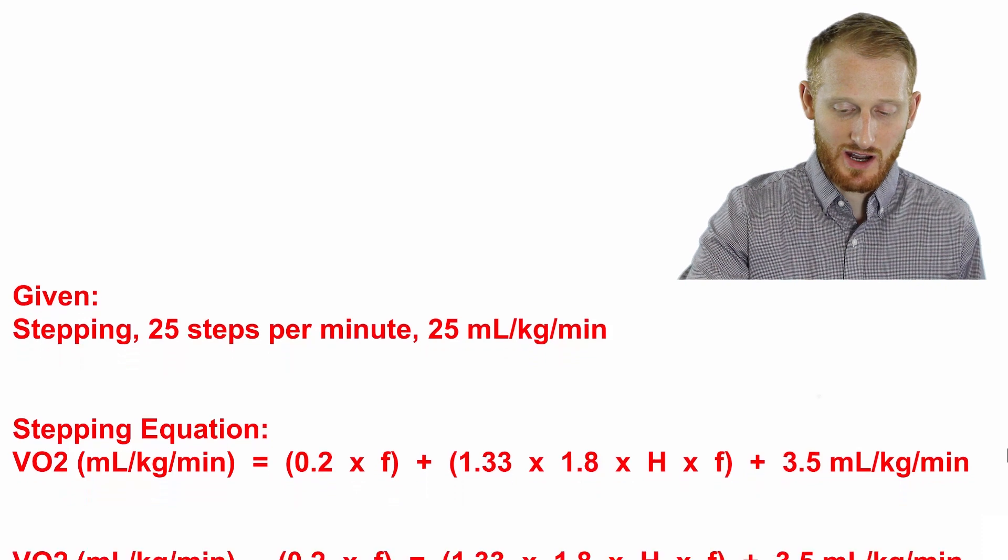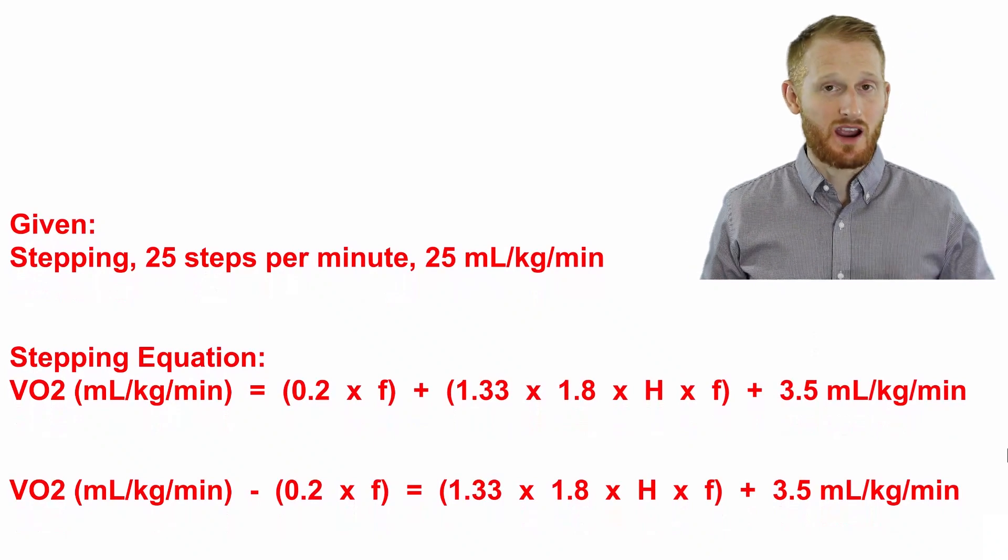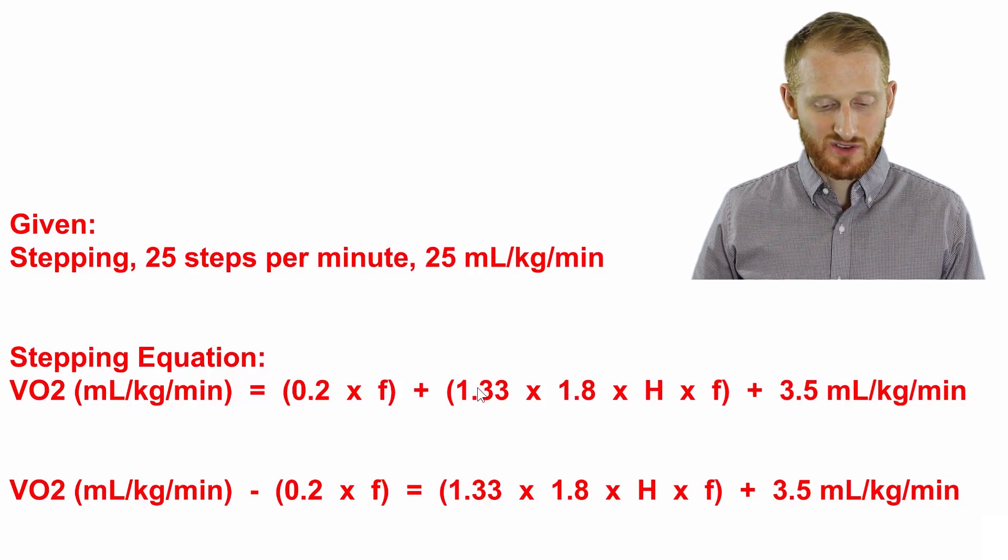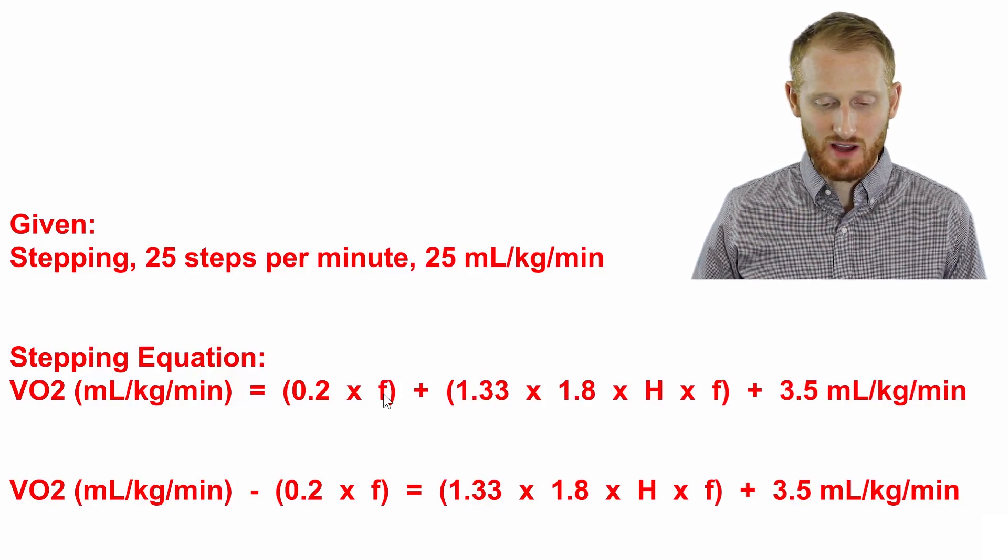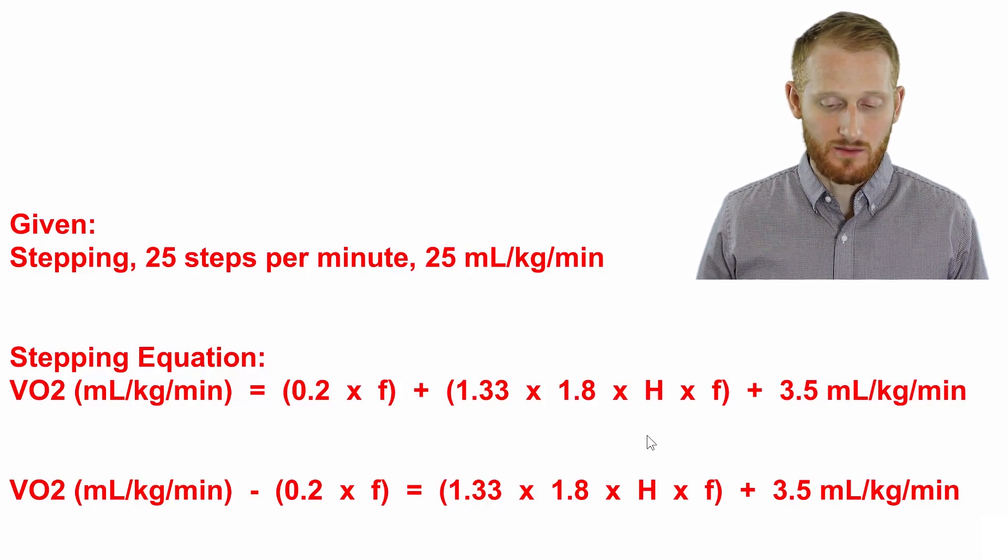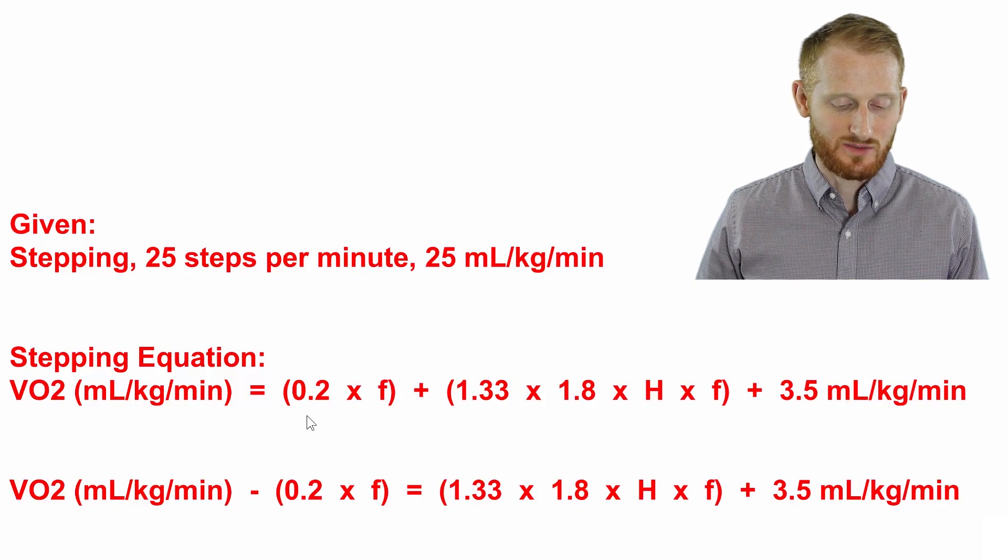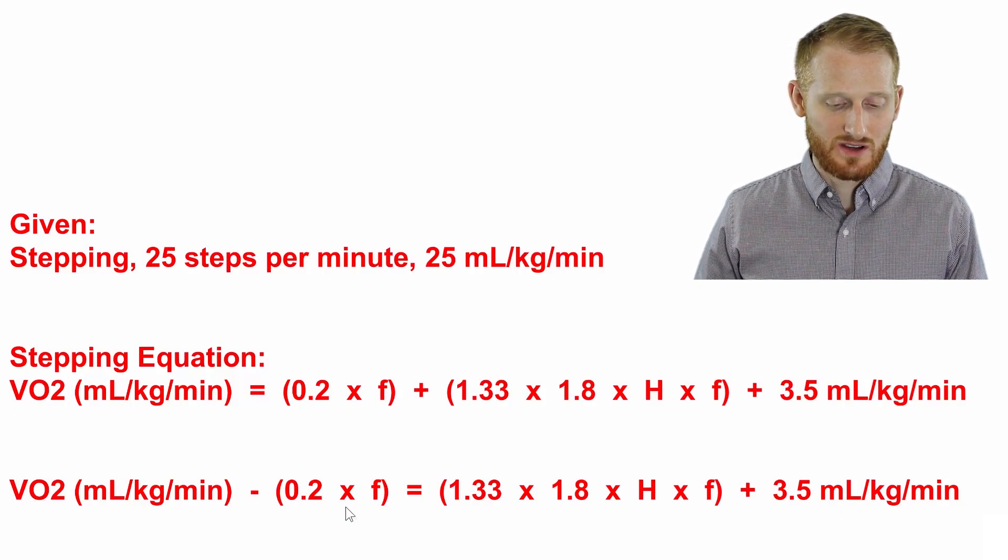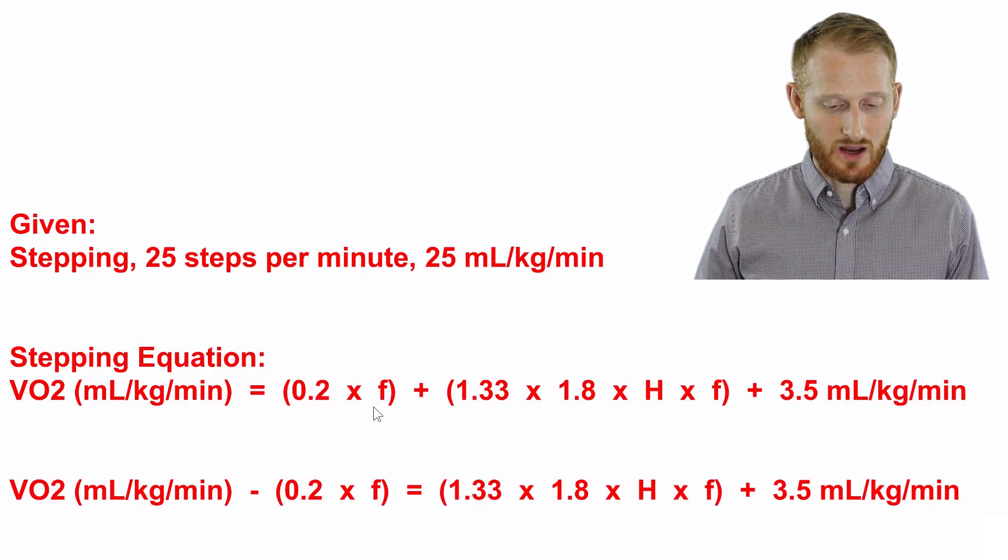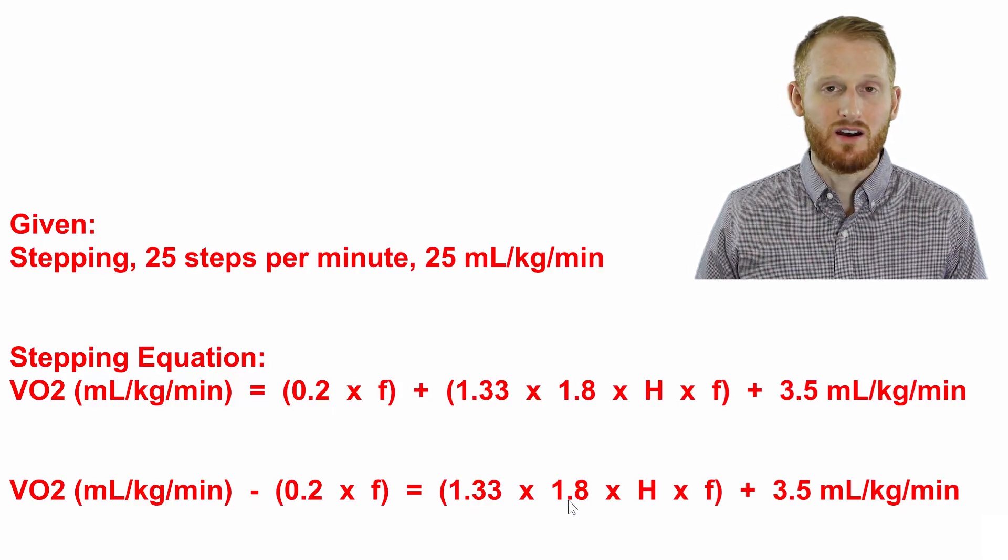So we need to do some rearranging because we need to try to isolate the H or the height portion of this equation so that we can calculate the height of the step. So the height is right here in the equation. First thing I'm going to do is start moving the things that are added to the height. So I'm going to start with this parentheses section here, and then I'm going to eventually take care of the 3.5 over there. And we're going to move to the other side and reverse the sign. Essentially we're canceling out by subtracting on this side and subtracting on the other side, which leaves it on that other side. So moving the parentheses here, 0.2 times frequency of the stepping to the other side with a subtraction sign instead of an addition sign.